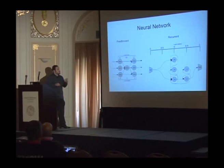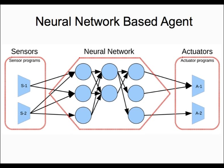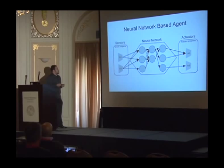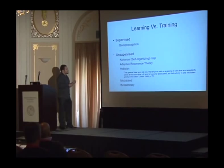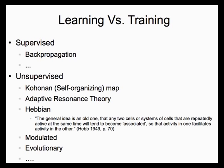Attaching sensors and actuators to the neural network gives us a neural network-based agent, which you can then use for your problems. Of course, we can already see that these systems are concurrent, but how do you set up those particular topologies or weights or all the parameters? Well, there are two approaches: supervised and unsupervised.